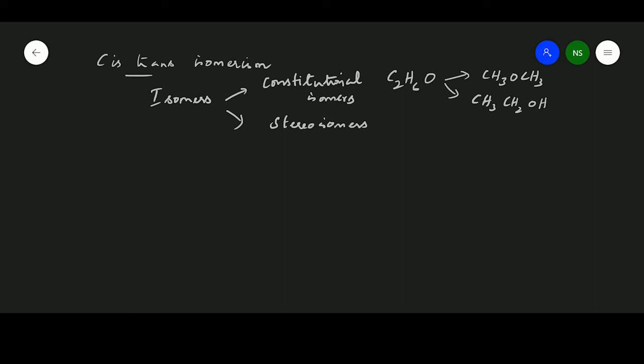These two compounds are completely different. They possess different physical properties. I'll give an example. Boiling point of methoxymethane is minus 23 degree Celsius and the boiling point of ethanol is 78 degree Celsius. These two possess different physical properties.